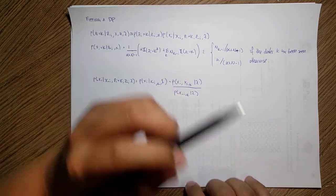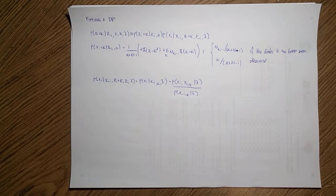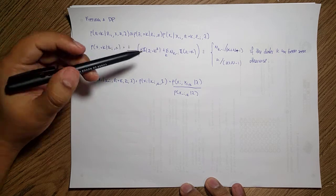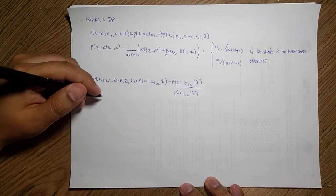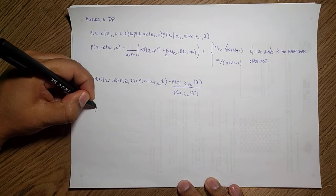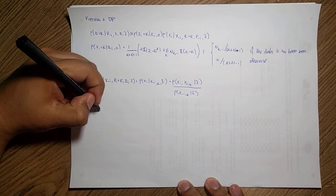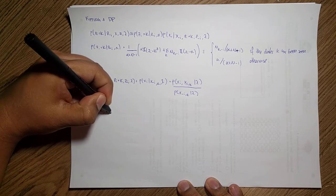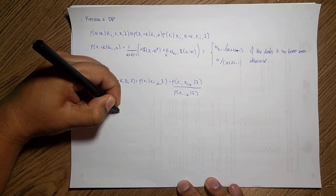This is then the joint of xi and the x not i k given lambda over the x not i k given lambda. I'm going to compute this as the joint, what is the probability of all the data belonging to k over the likelihood of the data that already belongs to k.